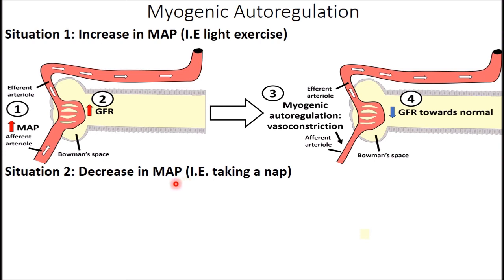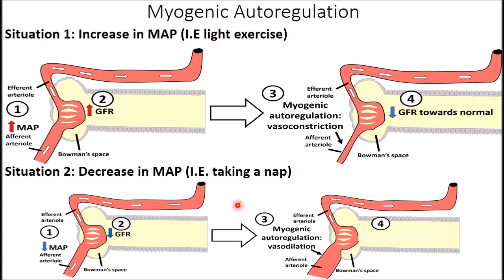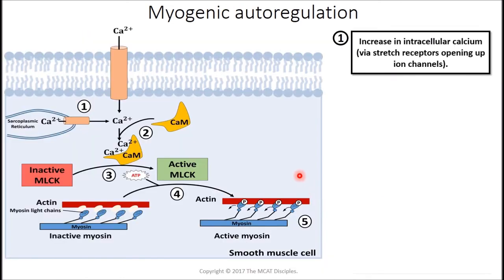That's myogenic autoregulation. The molecular mechanism involves an increase in intracellular calcium via opening of stretch receptors — mechanically gated ion channels — that trigger smooth muscle contraction of the afferent arteriole. This allows the kidney to intrinsically adjust GFR in response to changes in mean arterial pressure.